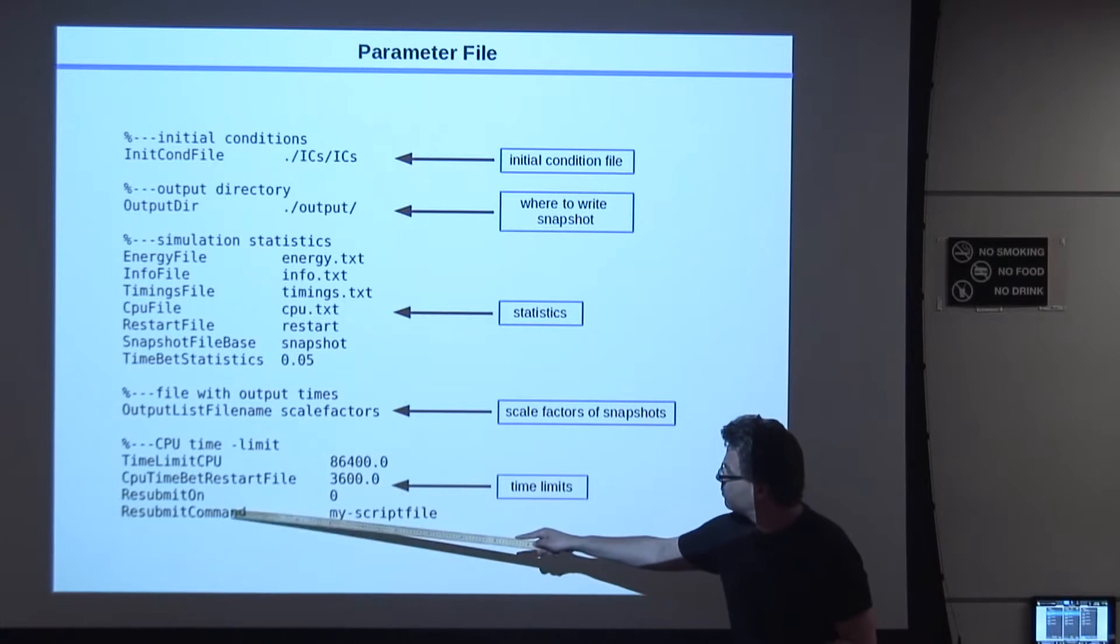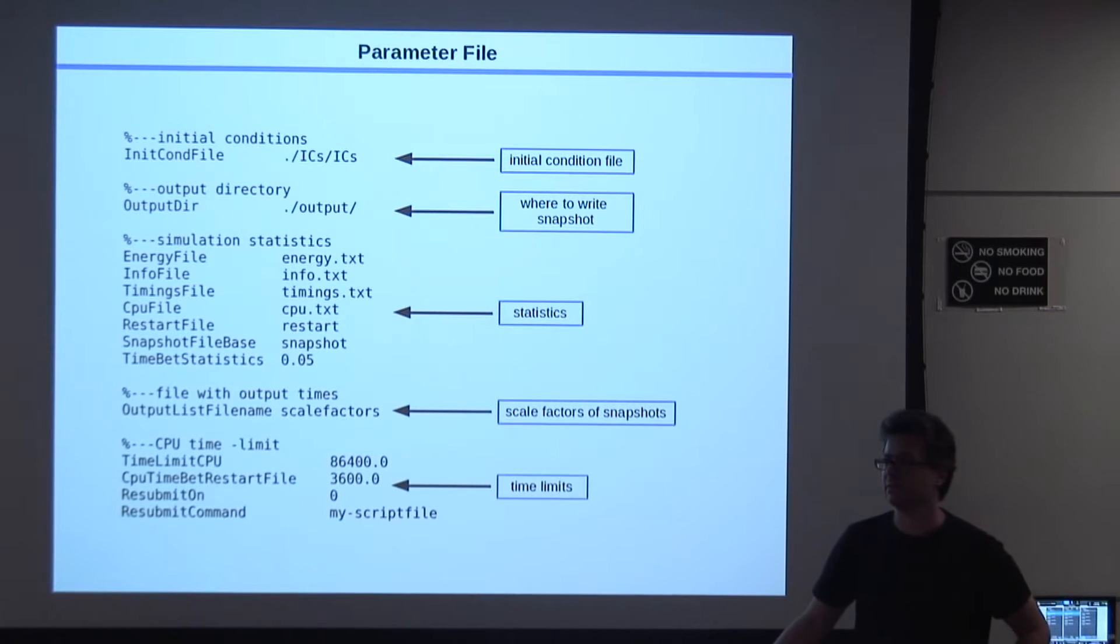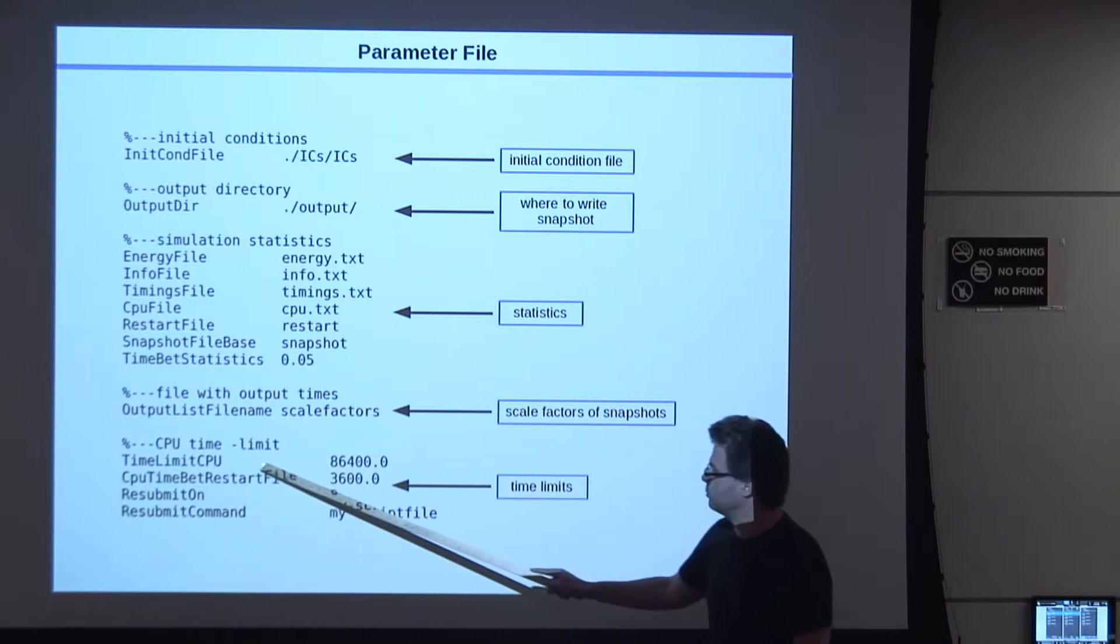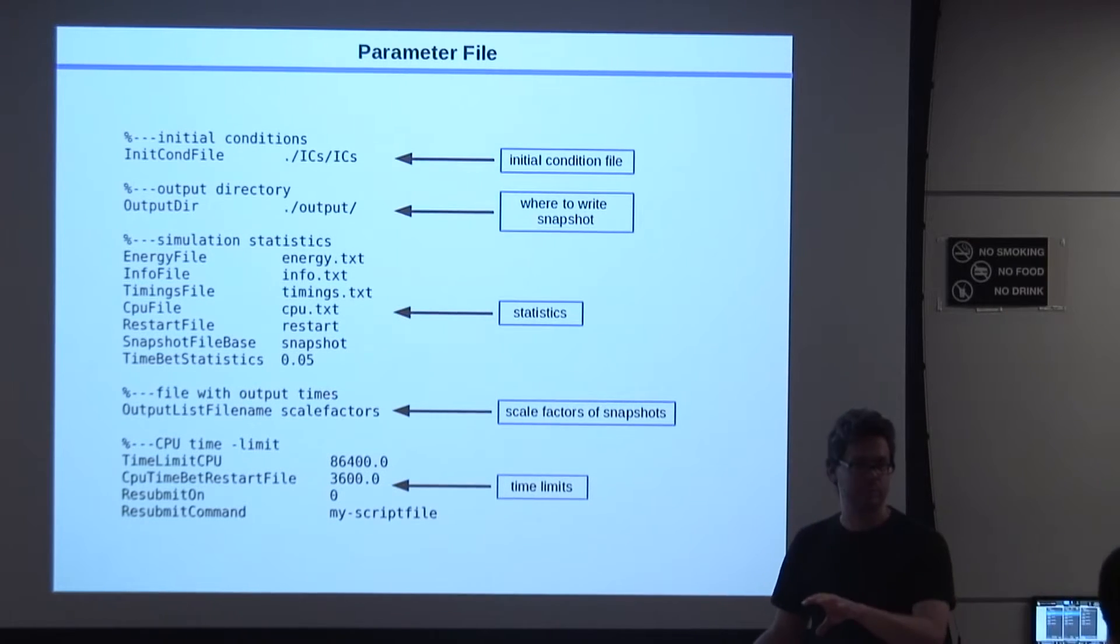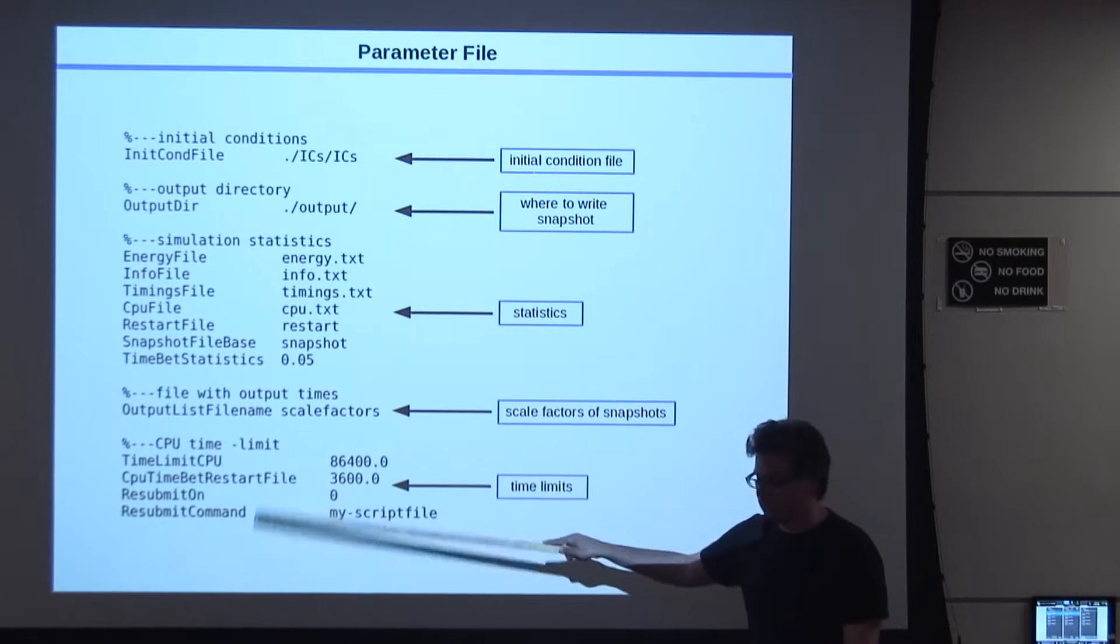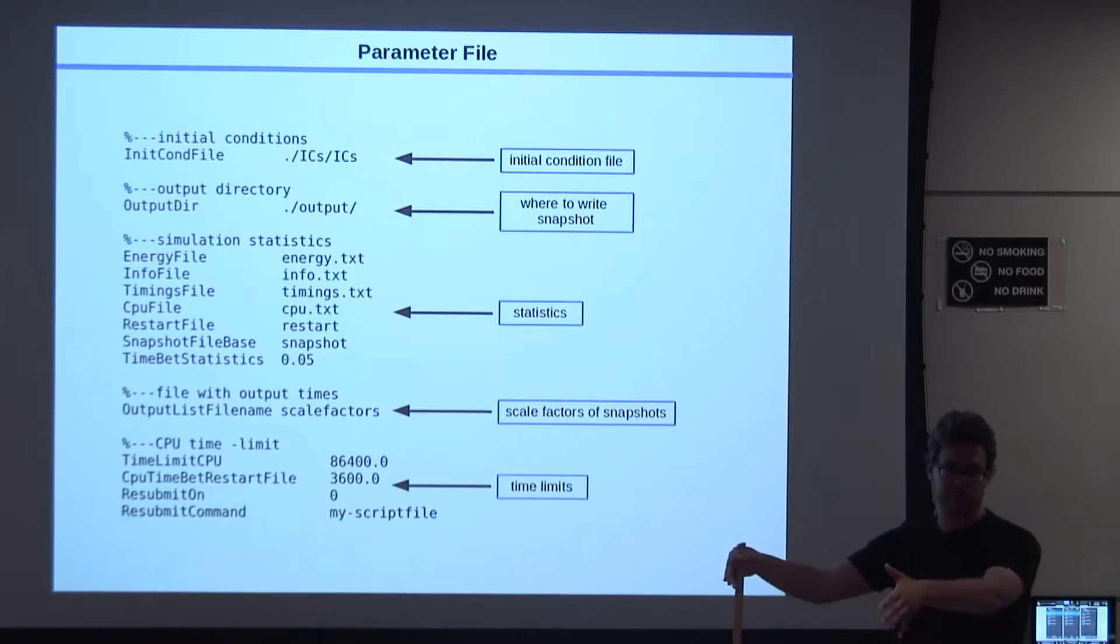Does anybody know what the cpu time limits could be for? Any idea why this is useful or important? Yeah, exactly. So on most supercomputers, you can run 24 hours, and then your job is stopped. So you have to tell the code this, so that it knows that it writes a checkpoint file before, from which you then can continue. Otherwise, you lose all the data. The code is actually written in a way that you can interrupt it as much as possible. It's absolutely binary invariant. So if you restart, it just runs as it was never interrupted. It really makes a core dump of the whole memory on disks.